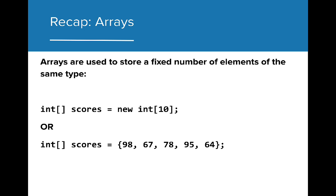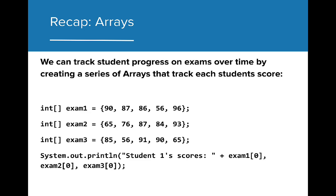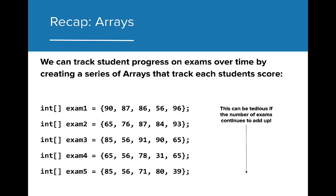In Unit 6, we learned how we could create arrays, which allow us to store a fixed number of elements of the same type in one variable. Using arrays, we can store series of data in list form to make it easier to access information. In this case, we can track student progress on exams over time by creating a series of arrays that track each student's scores. Even this, however, can become tedious if the amount of data begins to grow consistently. Keeping track of exams 1 to 20 in 20 different variables can be tedious and can lead to careless mistakes if we aren't careful.